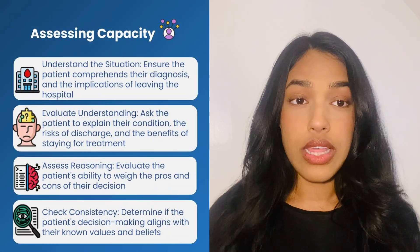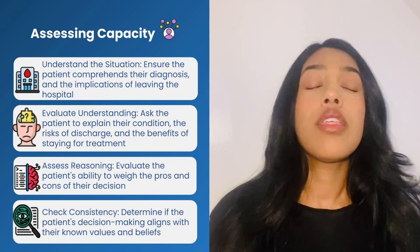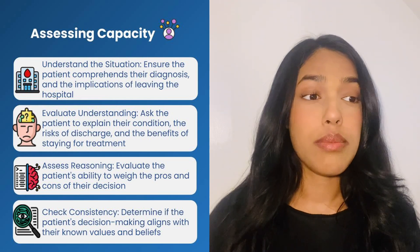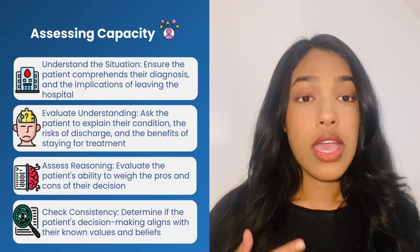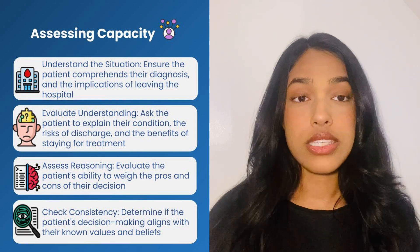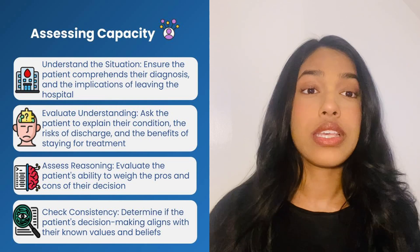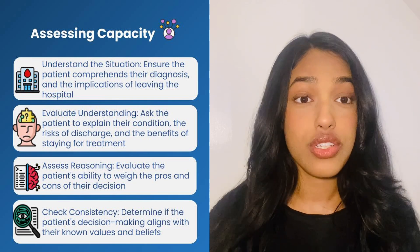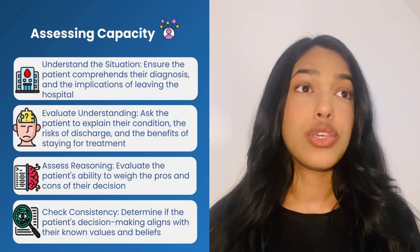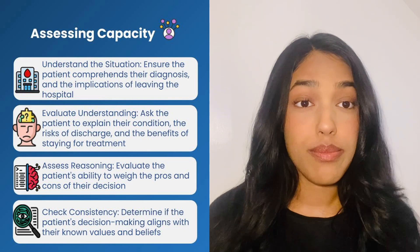There are a few steps you would take to ensure a patient has capacity. The first is to check their understanding. It's important that the patient can comprehend the nature of their condition, and in this scenario with severe liver disease, they must understand the severity of their condition. An effective way to check this is to ask the patient to explain their condition back to you.